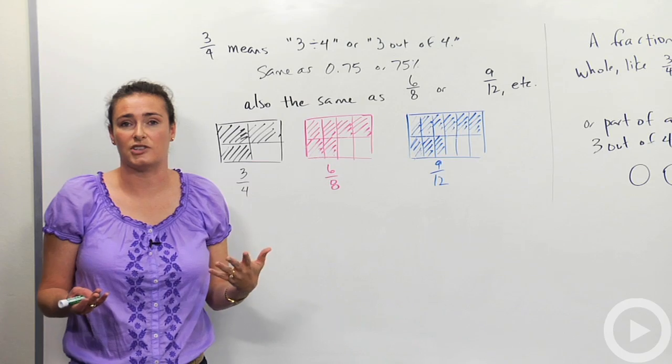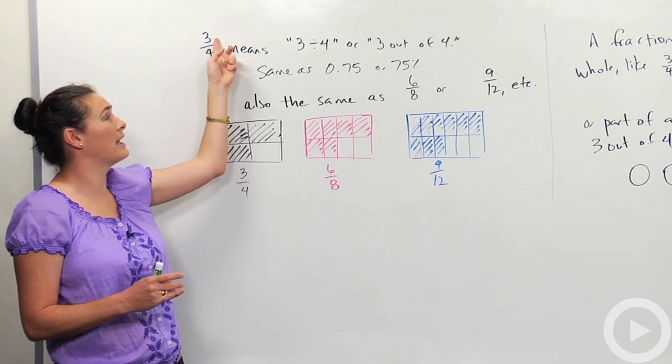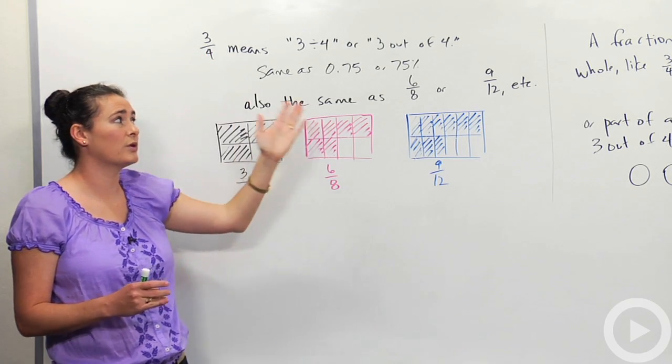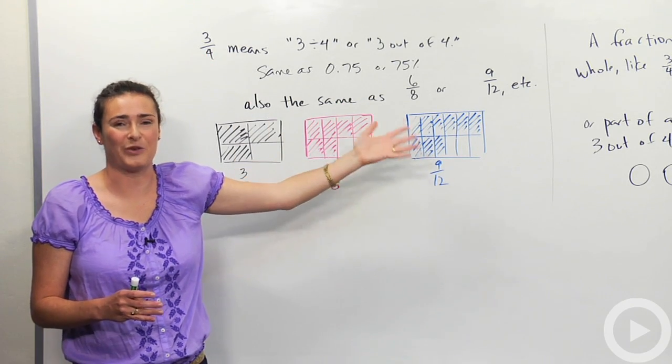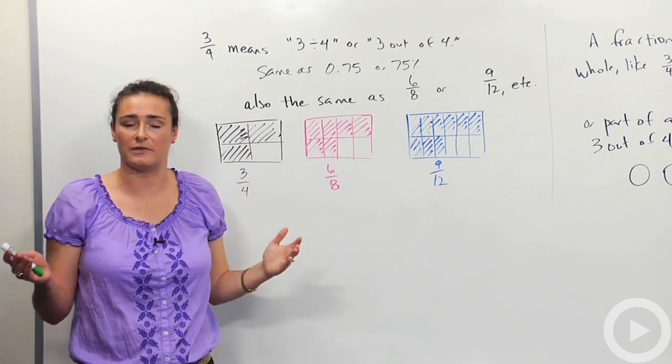Those are called equivalent fractions, and we're going to talk a lot about that. Again, what I'm doing is I'm multiplying top and bottom by the same number to get from one form of 3 fourths to other forms of 3 fourths. That's how we create what are called equivalent fractions.